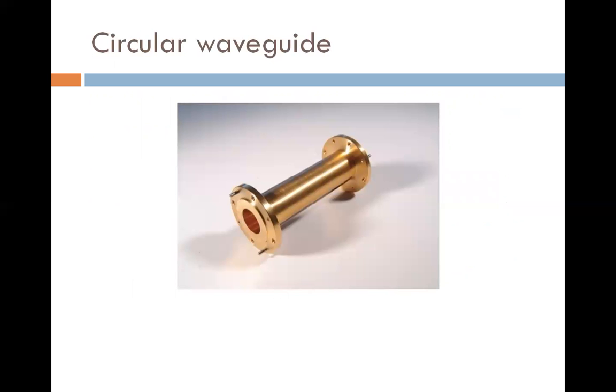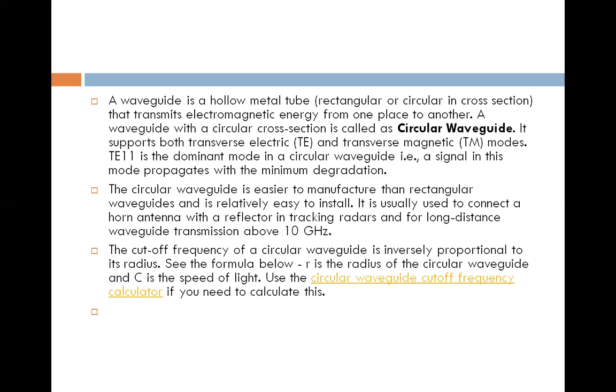Second is circular waveguide. See the structure, how it looks like. It's a hollow pipe. This is the structure of the circular waveguide. The waveguide is a hollow metal tube that transmits electromagnetic energy from one place to another place.